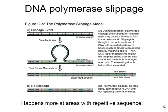DNA polymerase is a pretty amazing enzyme. It's able to move really, really quickly, catalyzing the formation of those phosphodiester linkages, and it's able to proofread and double check its work. But sometimes things go wrong. One of the things that can go wrong is the polymerase enzyme can slip.